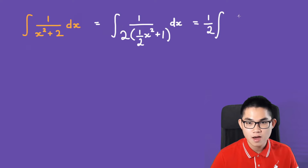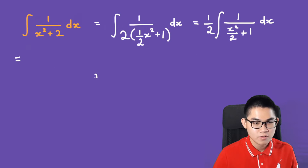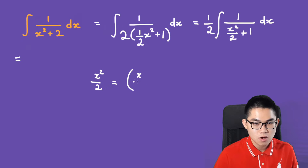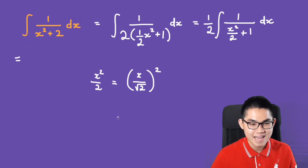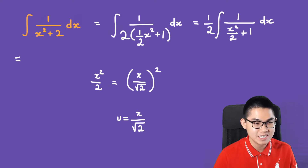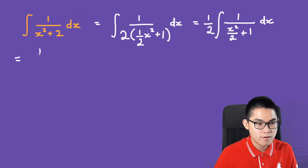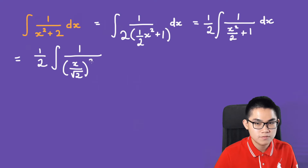We have 1/2 times the integral of 1 over (x squared over 2 plus 1) dx. We notice that x squared over 2 can be rewritten as (x over the square root of 2) squared. This is the key trick. So we let u equal x over the square root of 2, and rewrite the integral as 1/2 times the integral of 1 over (x over √2)² plus 1, dx.